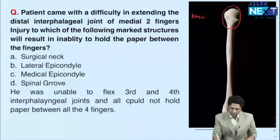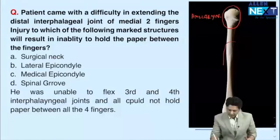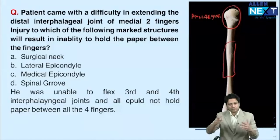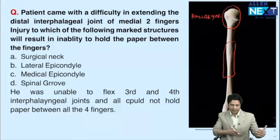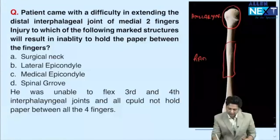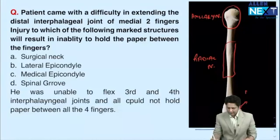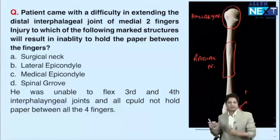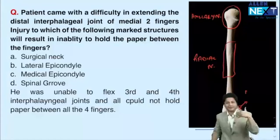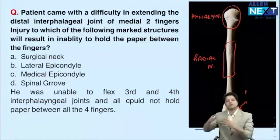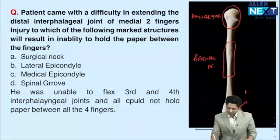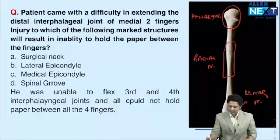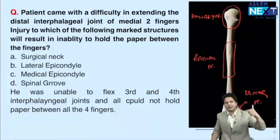The radial nerve passes from the medial to the lateral aspect through the spiral groove, so mid-shaft humerus fracture injures the radial nerve. Posterior to the medial epicondyle we have the ulnar nerve — if there is a fracture or dislocation resulting in compression or impingement of the ulnar nerve, it results in ulnar nerve injury. Also, as a late complication of lateral epicondyle fracture, ulnar nerve injury can occur.